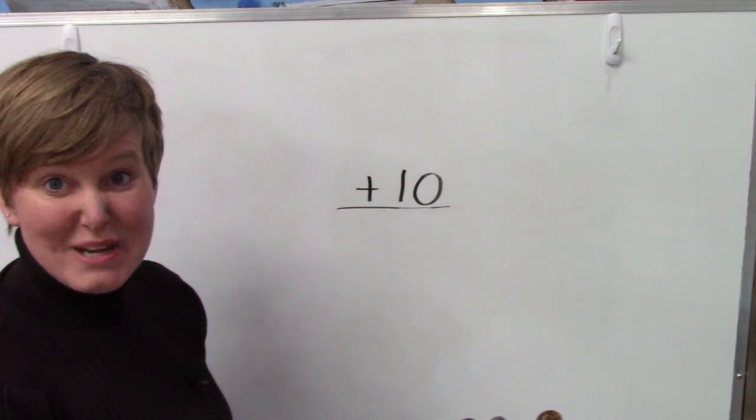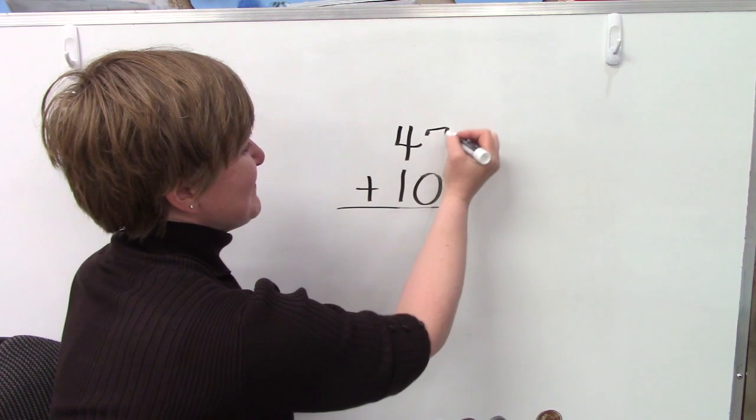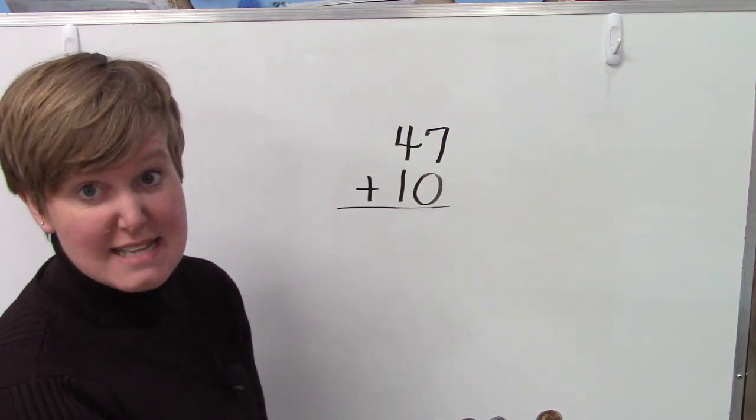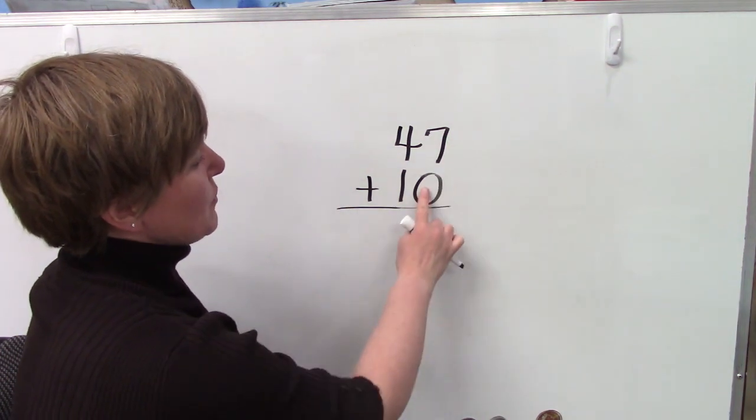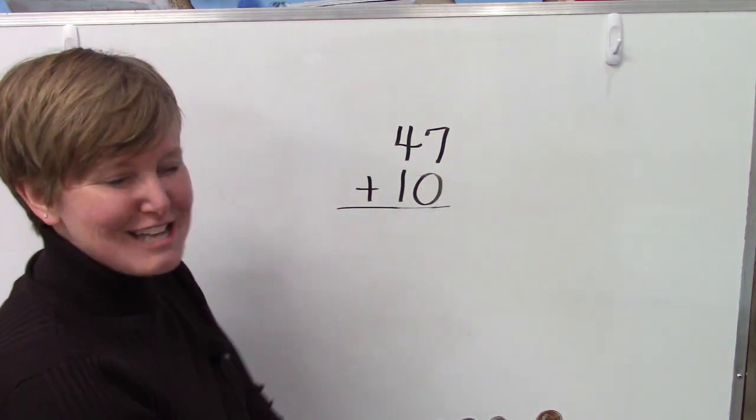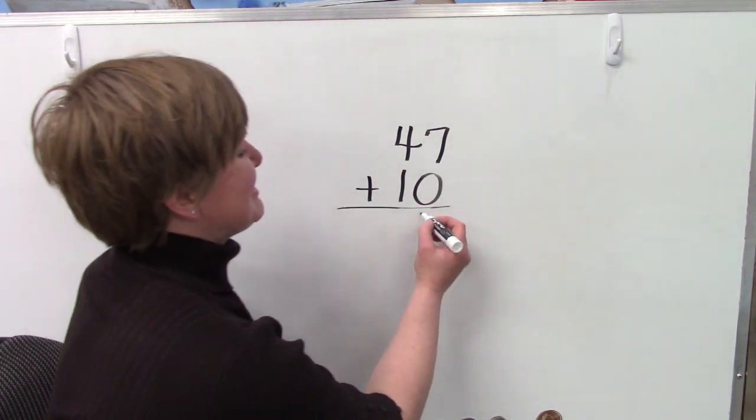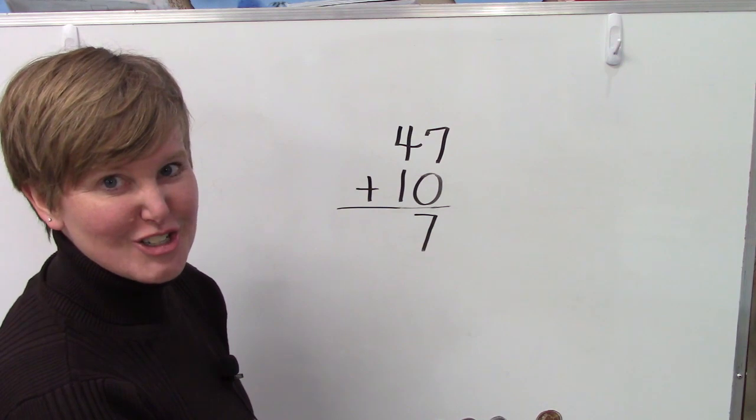Instead of 23, this time we're going to try 47. 47 plus 10. Let's start with our ones place. We have a 7 and a 0. Well, that's easy. 7 plus 0 is 7. Any time that you add 0 to a number, it's not going to change the answer.